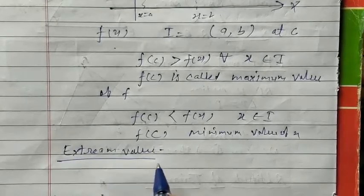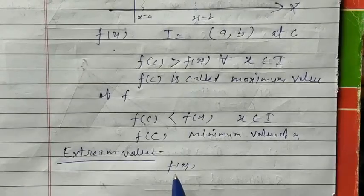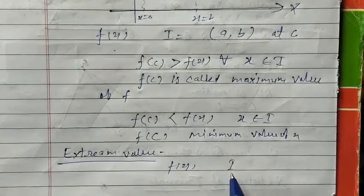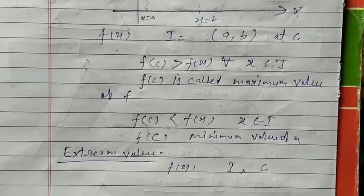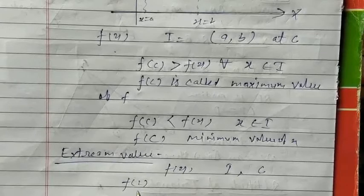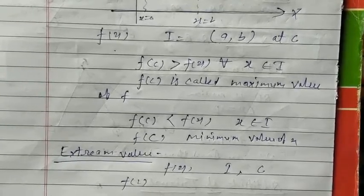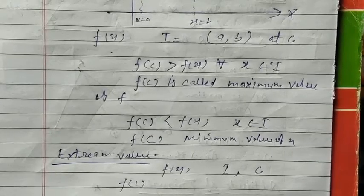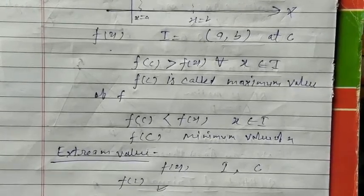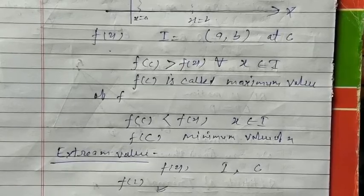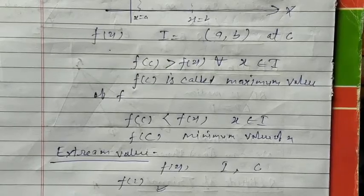Now, what is an extreme value? A function f(x) is said to have an extreme value in an interval I if there exists a point c such that f(c) is either the maximum value or the minimum value in that interval. Then f(c) is called the extreme value of the function.